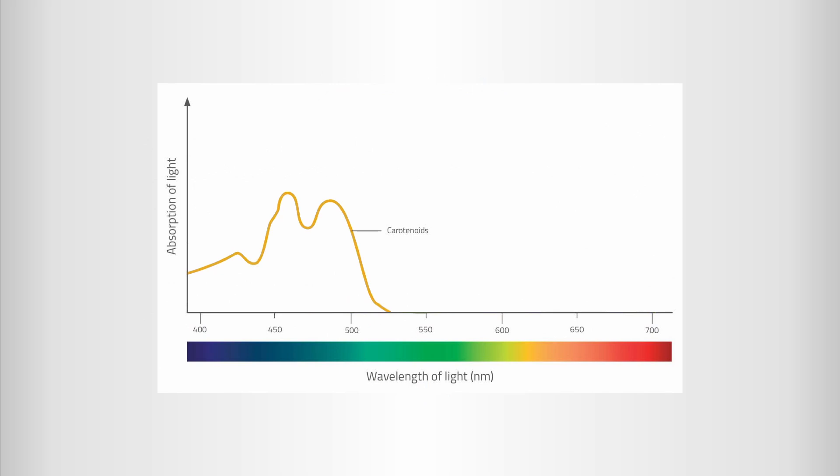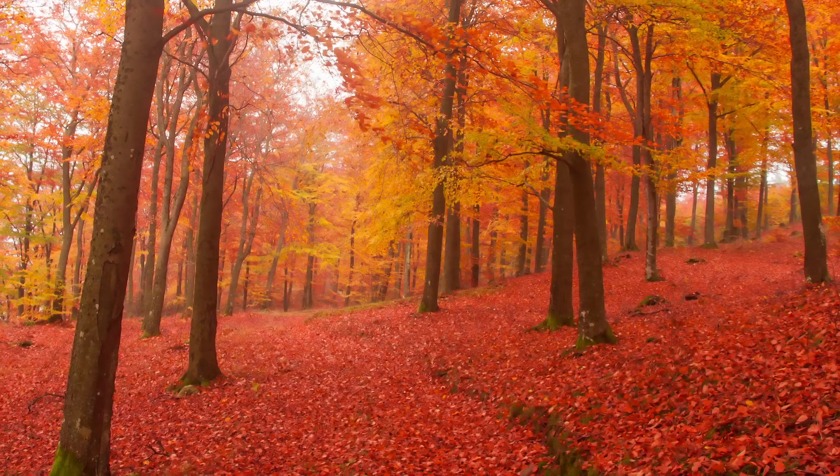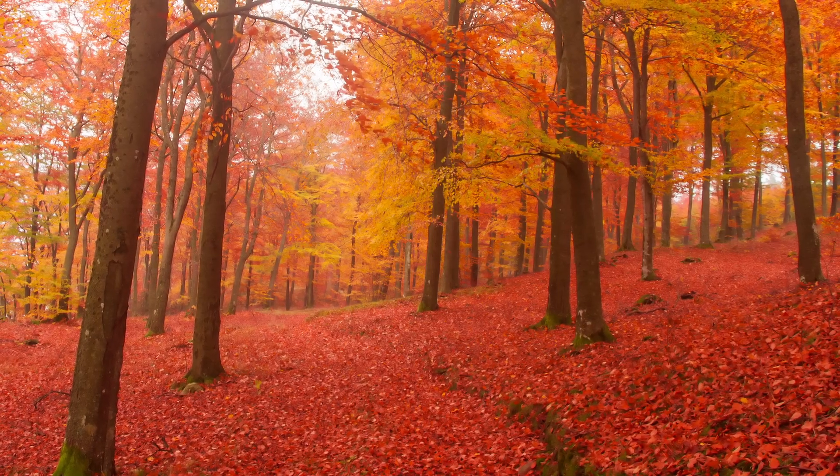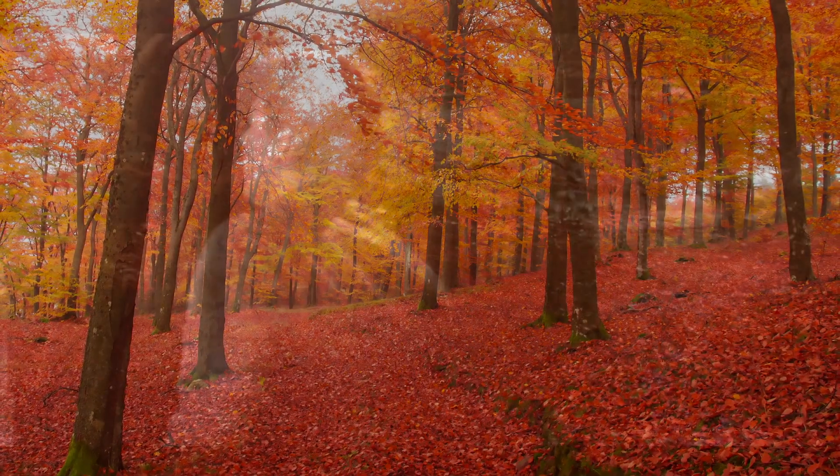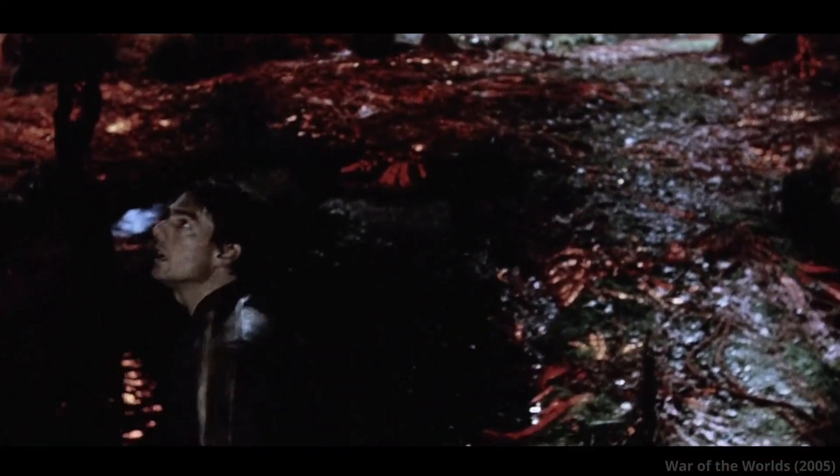Carotenoids have a reddish color, which would mean that all plants on Earth would have evolved to make the world look like a place trapped in perpetual autumn, or maybe something more akin to War of the Worlds.